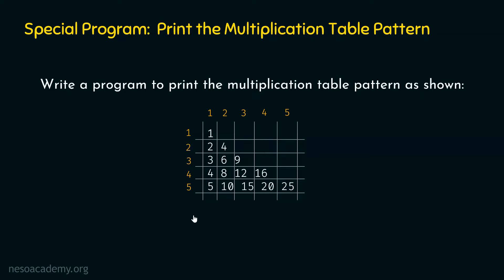It can be observed that each row number decides the multiples that will be printed on that specific row. Row number five will have multiples of five printed up to column number five. Similarly, row number four will have multiples of four up to column number four, and row number three will have multiples of three up to column number three. With this information, we are ready to write the program.